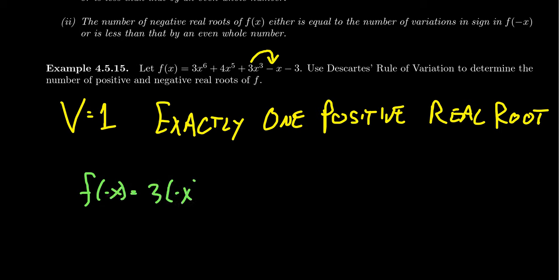So you get 3(-x)^6 + 4(-x)^5 + 3(-x)^3 - (-x) - 3, like so. And then when you have an even power of a negative, it's going to be positive. If you have an odd power of a negative, it's going to be negative. So f(-x) is going to become 3x^6.